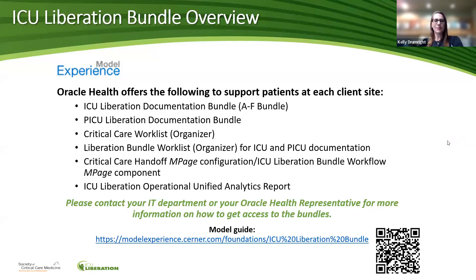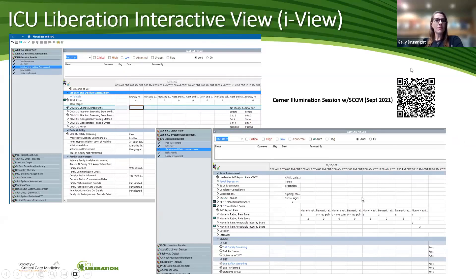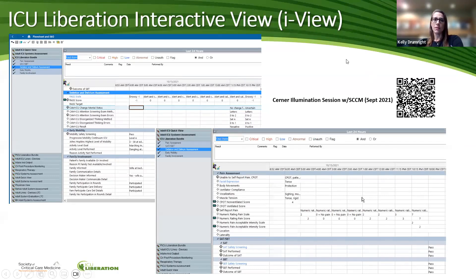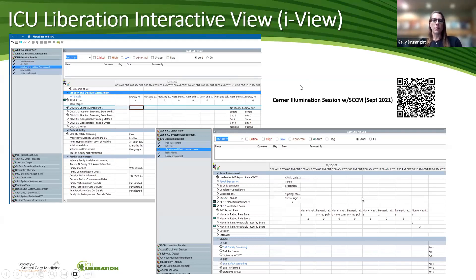This is the flow sheet that nurses will do a lot of their documentation on — all Cerner users will recognize it. You log in based on your role, so they may have similar documentation. This is the band dedicated to the ABCDF bundle, and similar to Epic, if a nurse or anyone documents any elements of this bundle on another flow sheet, it's going to pull it in — so you're not double or triple documenting. This is essentially one page that you scroll all the way down and can see all elements of the bundle documented.